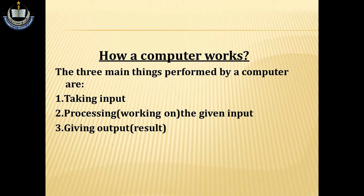Computer تین اہم طریقے سے کام سر انجام دیتا ہے۔ Number one: taking input یعنی input لینا۔ Number two: processing, working on the given input یعنی computer میں ہم جو کچھ بھی input کرتے ہیں اس پر کام کرنا۔ And number three: giving output, it means result یعنی جو کچھ ہم کام کرتے ہیں اور وہ جو processing کرنے کے بعد جو کچھ بھی ہمیں ظاہر کرتا ہے وہ output کہلاتا ہے۔